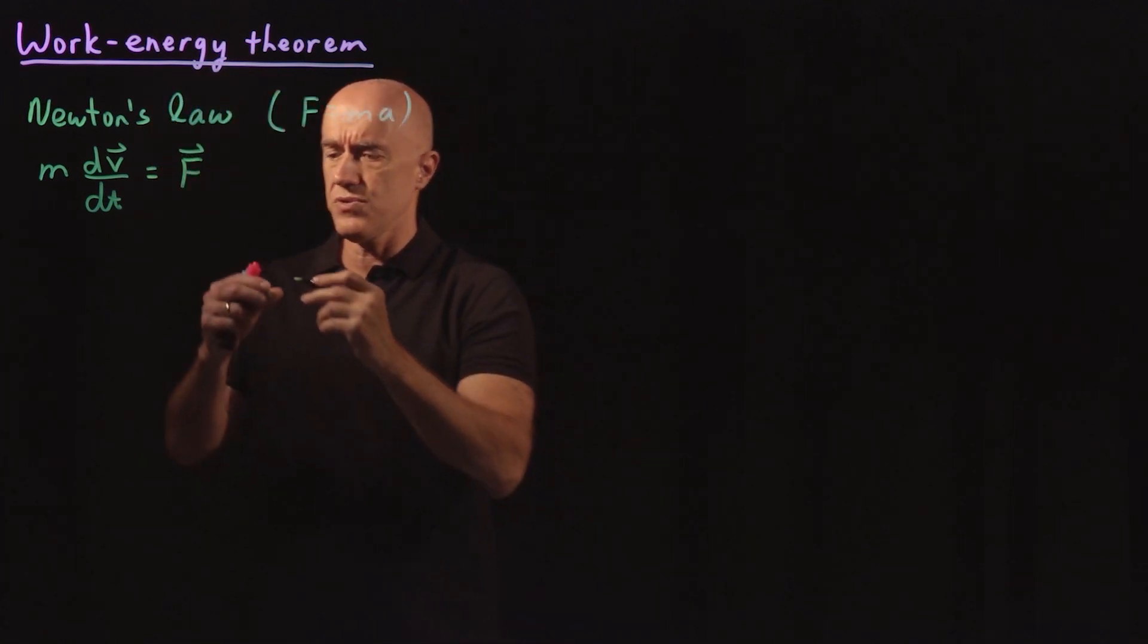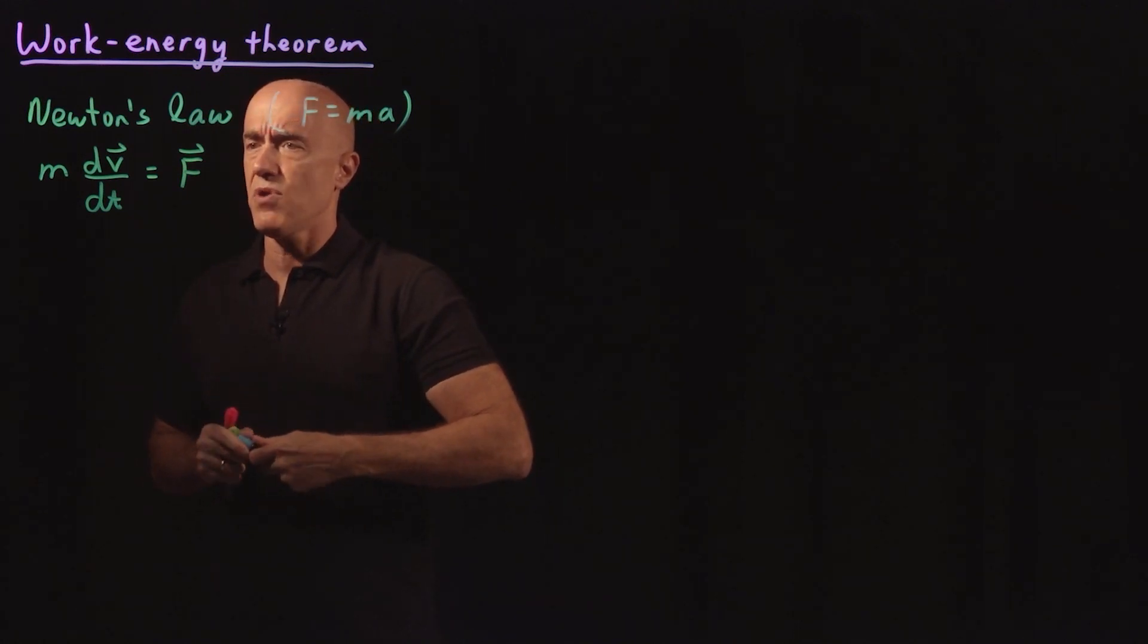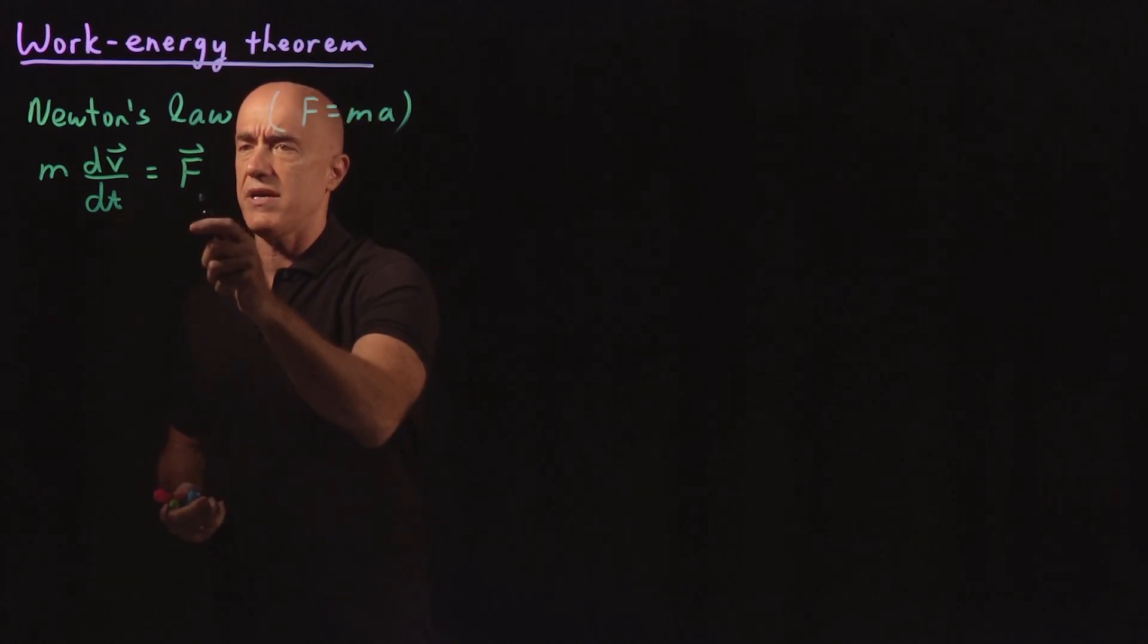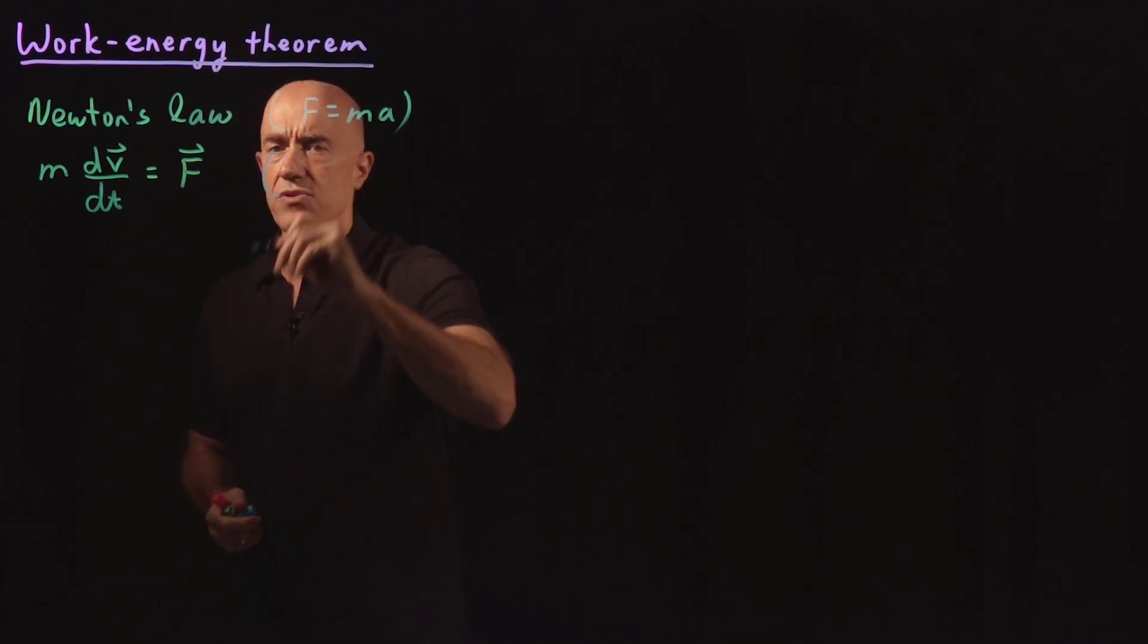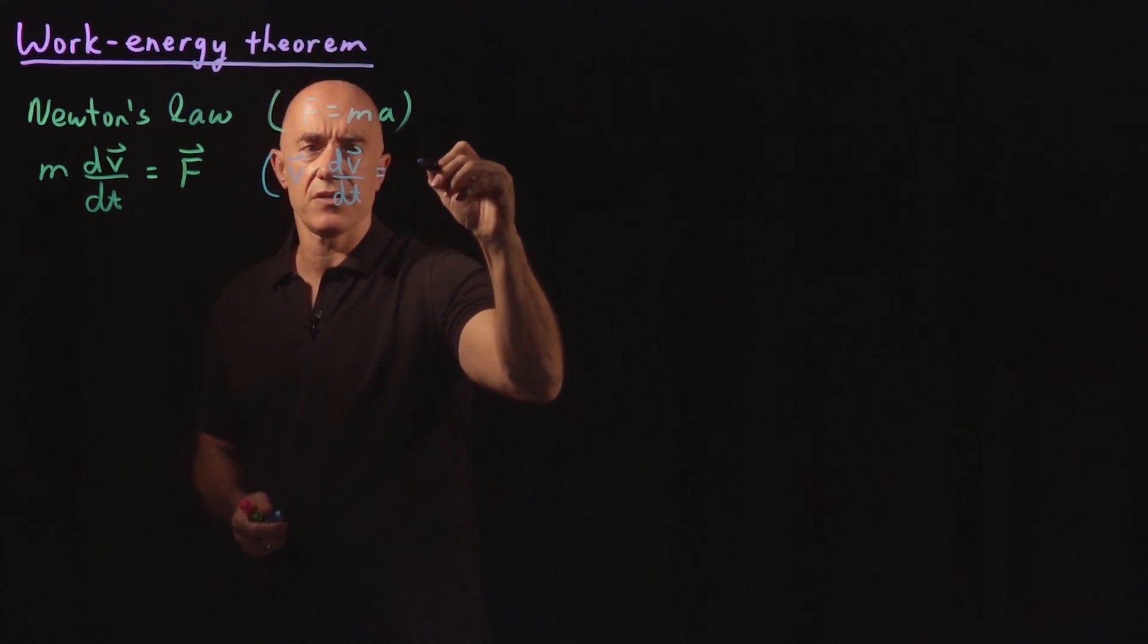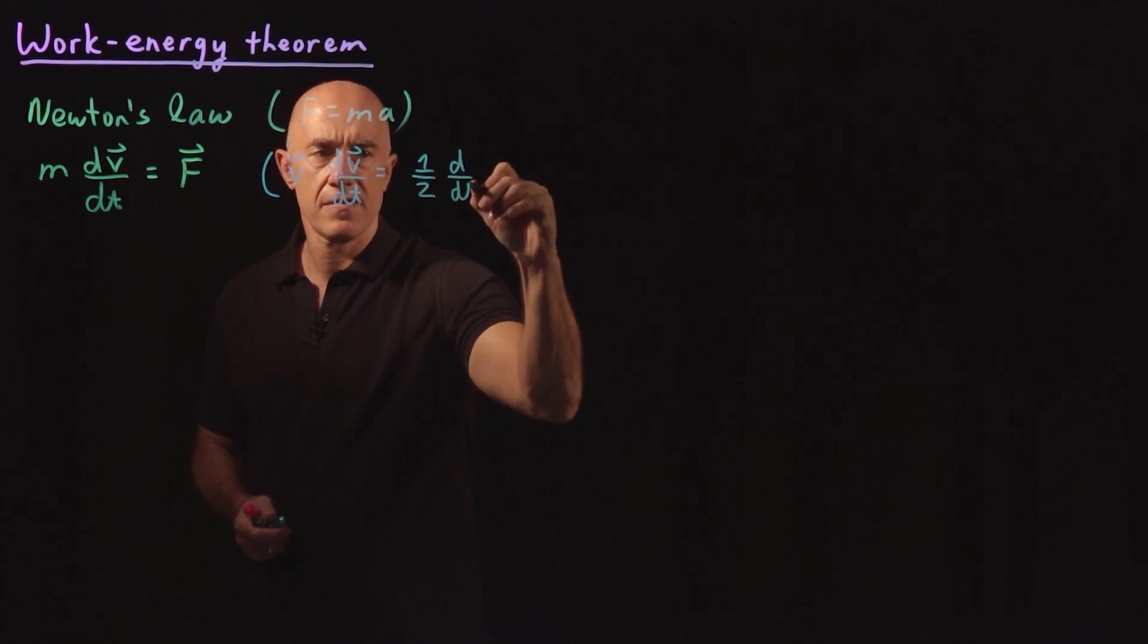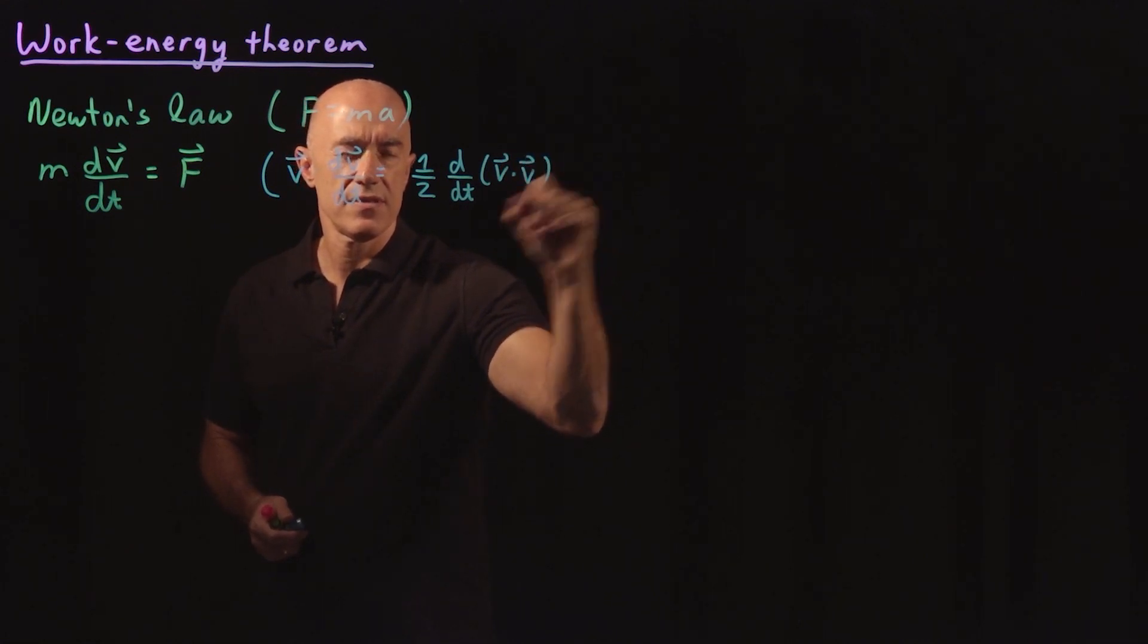We can use an identity here. I'm going to want to multiply both sides of this equation by V, take the dot product with V. So we can use an identity that if we look at V dotted with dV/dt, this is actually equal to one half d/dt of V dotted with itself.